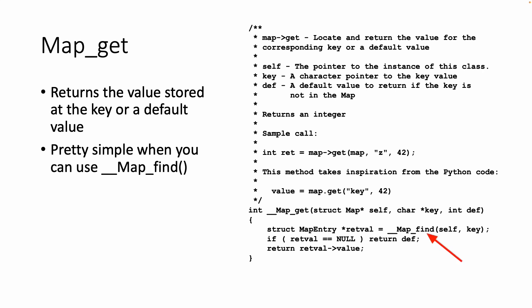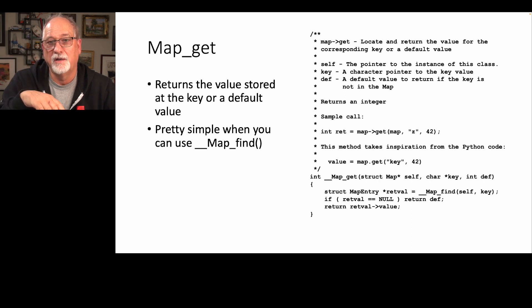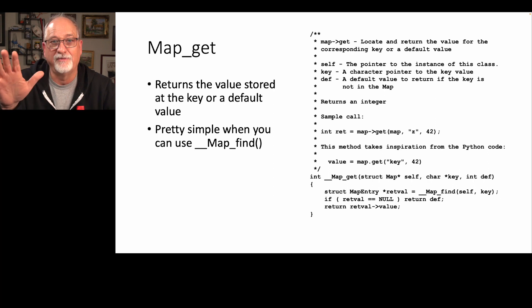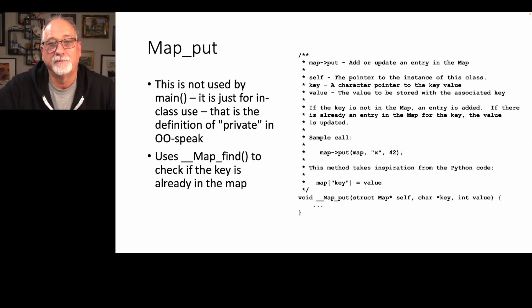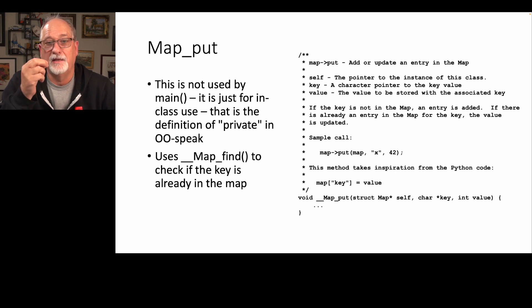Map get is pretty simple as long as you have something like map find to do the hard work — it can look at double underscore head and next. Map find is private, but since we're in the class, we can access the private stuff freely. For map put, if map find returns a result, you've found it — just change the value and return. If not, construct a new map entry and add it to the end of the list. I hope by now you can knock these things out.